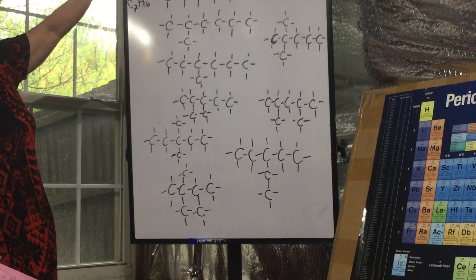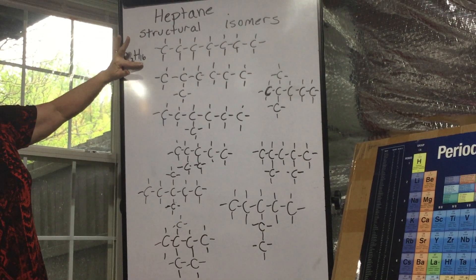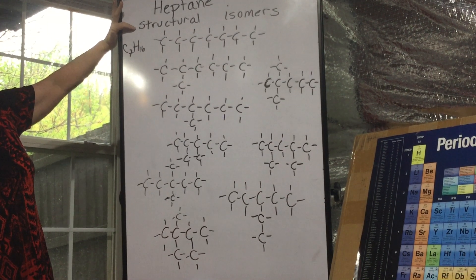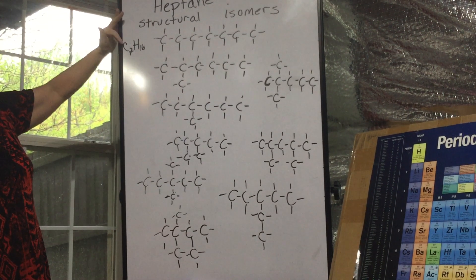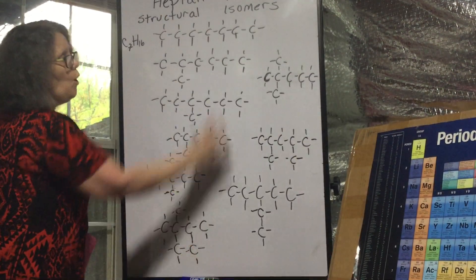These all have 7 carbons and 16 hydrogens so they're called structural isomers, meaning they have the same number of carbons and hydrogens.